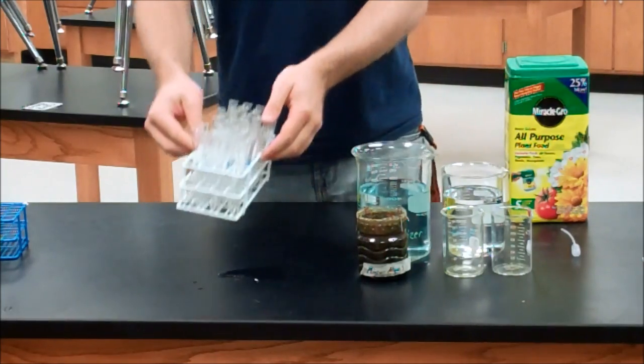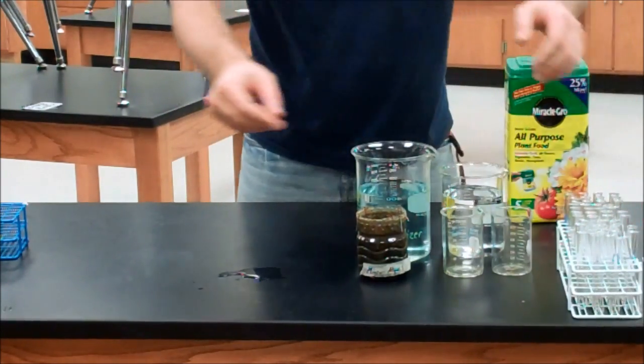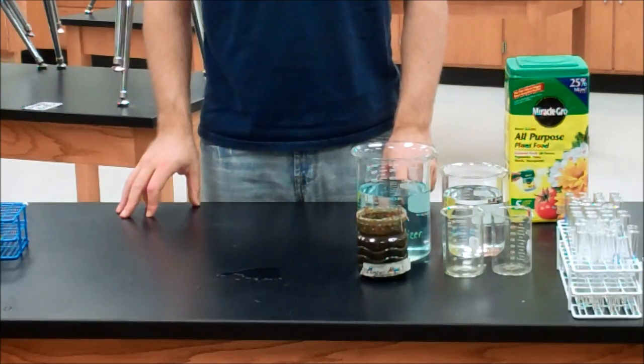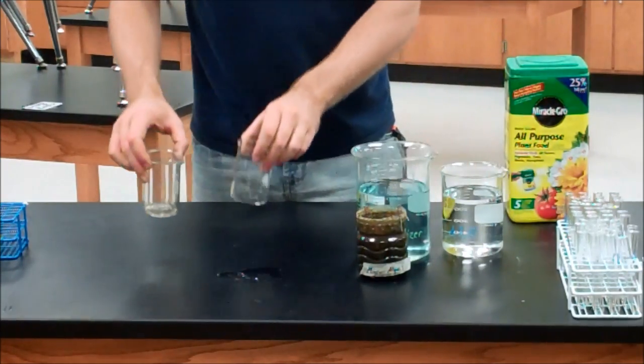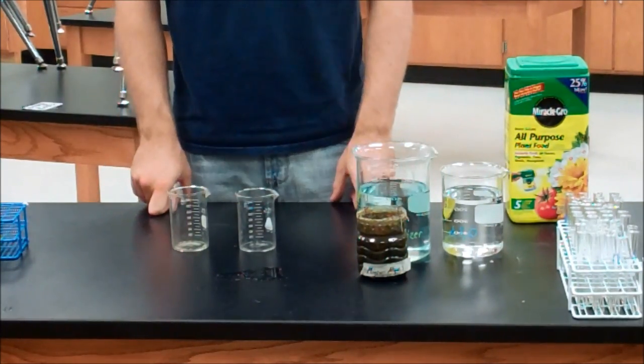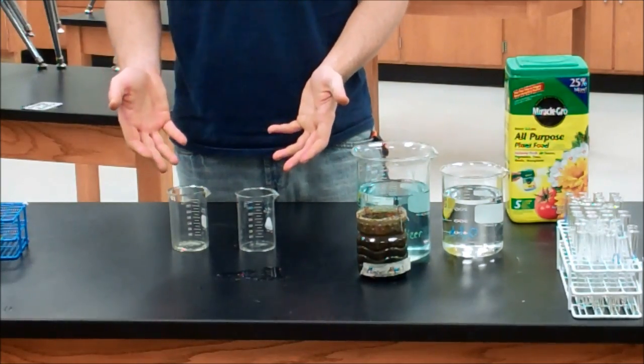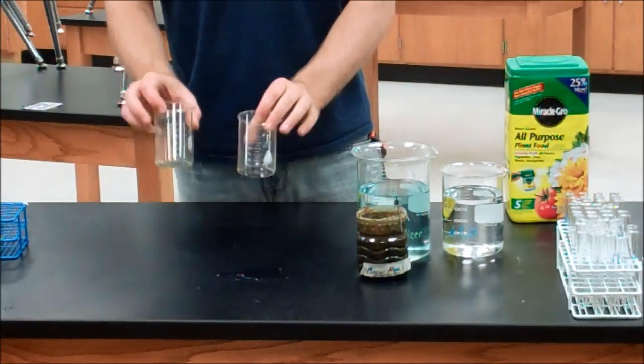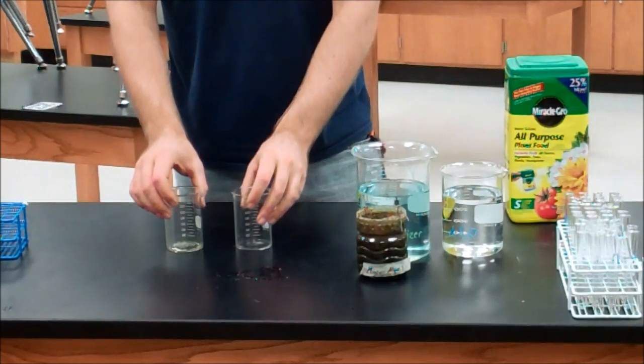From here it's time to start making dilutions of our fertilizer. To do our dilutions you're going to need two equal volume containers. They could be anything from disposable cups, Dixie cups or beakers. As long as they're the same size they're going to work fine.